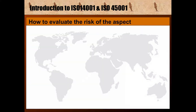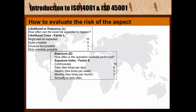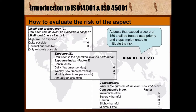How to evaluate the risk: you first calculate the likelihood the risk can occur. How often is the aspect that caused the impact in operation? What is the outcome of the event should it occur — is it irreversible or minimal? You will then multiply the likelihood by the exposure and the consequence to calculate the risk, then give priority to the highest risks first to implement a management program to manage the risk.